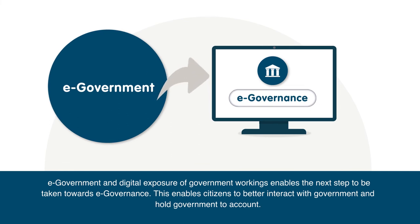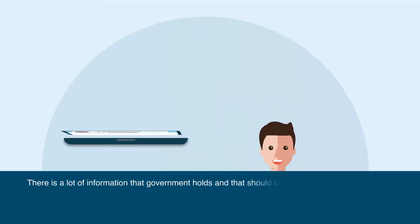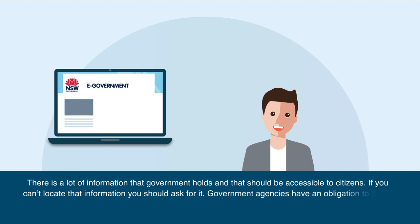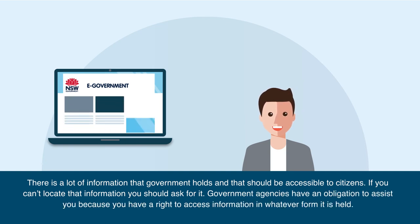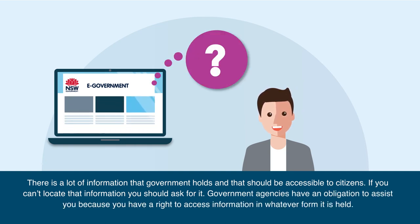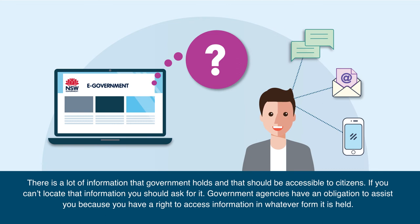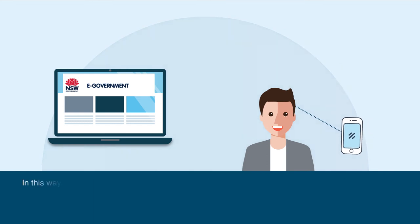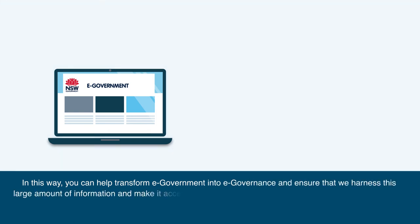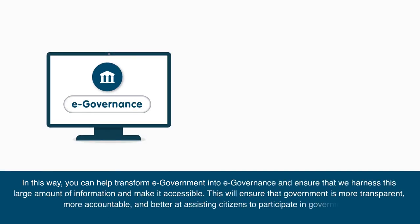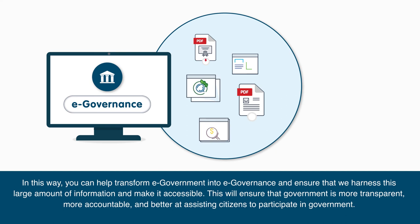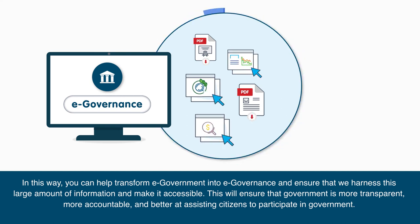This enables citizens to better interact with government and hold government to account. There is a lot of information that government holds and that should be accessible to citizens. If you can't locate that information, you should ask for it. Government agencies have an obligation to assist you because you have a right to access information in whatever form it is held. In this way, you can help transform e-government into e-governance and ensure that we harness this large amount of information and make it accessible.